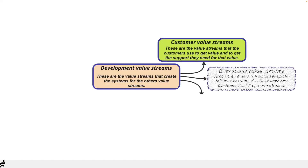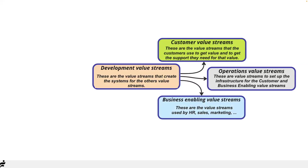I call the second type operations value streams — I know 'operations' and 'operational' sound close, but operations refers to what a company does internally. This often means setting up infrastructure for the customer. Then there's what I call business enabling value streams — things like HR, sales, and marketing — things that enable the business service.